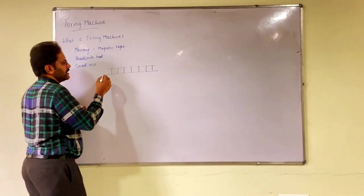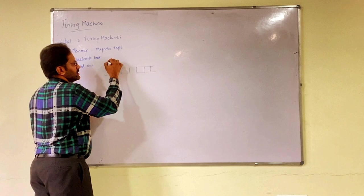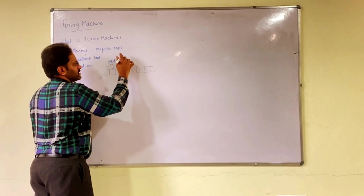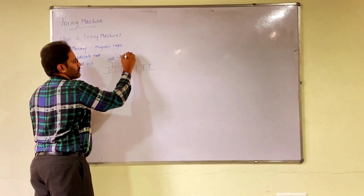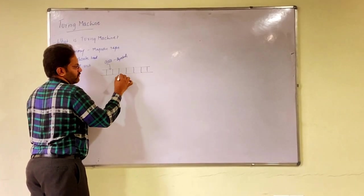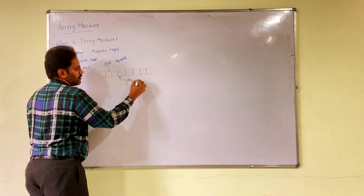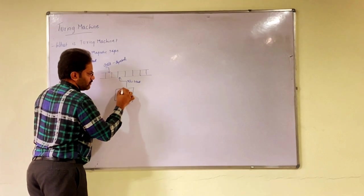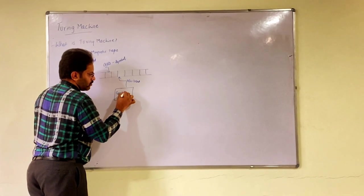Which has divided into something called as cells where each cell is capable of storing one symbol. And we have read-write head which either keep moving towards left or right which is controlled by control unit.